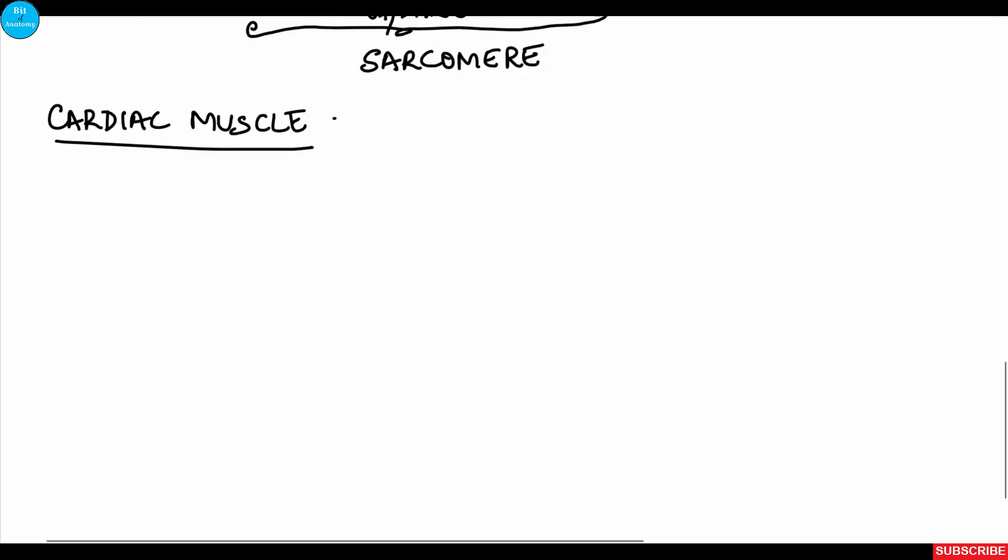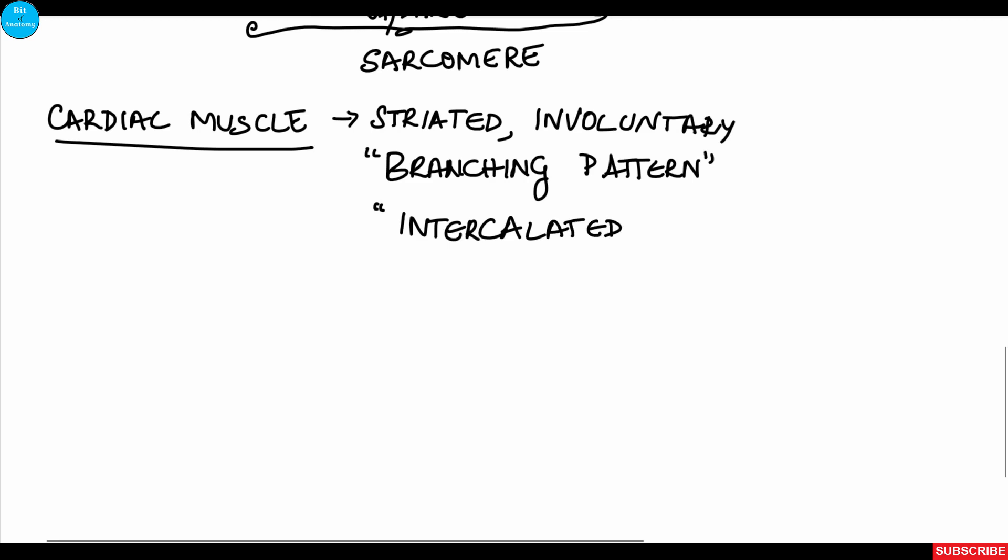Coming to cardiac muscle: it is an example of striated muscle fiber and is involuntary in nature. Branching pattern is the characteristic feature of cardiac muscle. In addition, there is the presence of intercalated discs. The cardiac muscle cells are branched, and these branches unite with other branches.